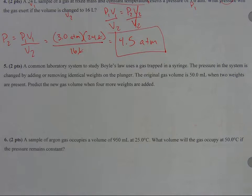Number five. A very common laboratory system that studies Boyle's Law, P1V1 equals P2V2, uses a gas trapped in a syringe - something that has a variable volume.